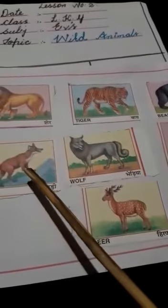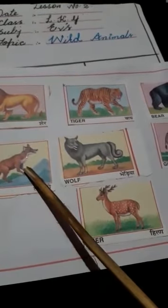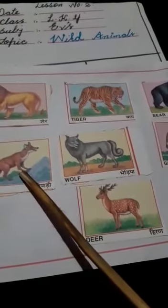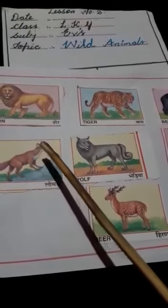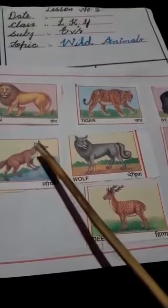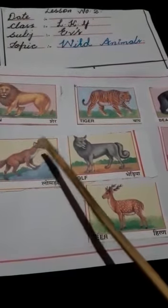Now, the next is fox. Lomdi. It has a long nose and a long pointed ears. Iski nose jai wo lambi hai, hoti hai. And iske ears jai wo pointed hoti hai. Long pointed hoti hai.